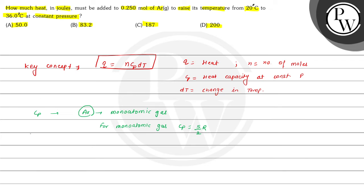Now, the number of moles are also given. Number of moles is equal to 0.250, and ΔT, that is change in temperature, is from 20°C to 36°C. That means T2 minus T1, which equals 36 minus 20, equals 16°C.